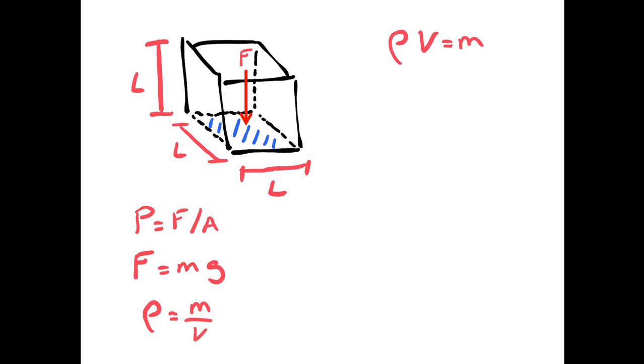So rearranging that, we get the density times the volume is equal to the mass. And put this all in our equation at the very beginning. So we get pressure equals rho V times by G divided by A.